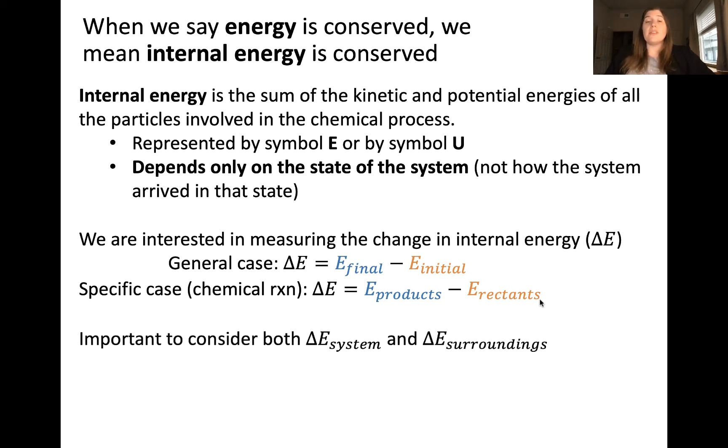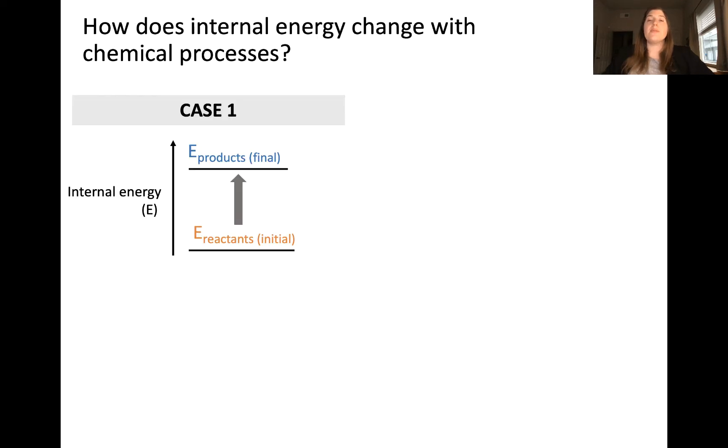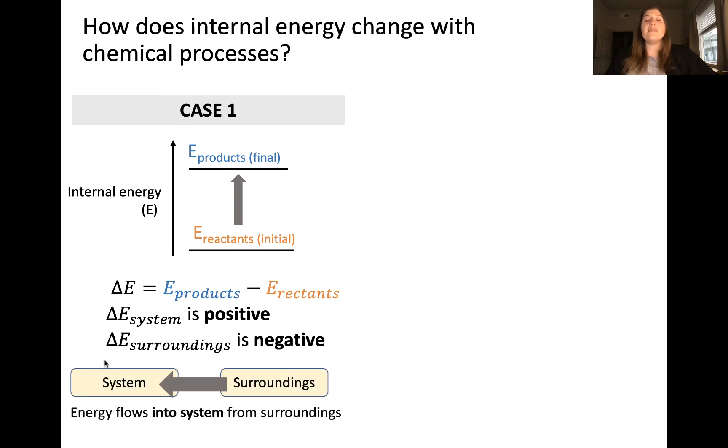It's important to consider both the energy associated with the system as well as the surroundings. We'll explore this with two scenarios. Consider a case where the internal energy of the products is greater than that of the reactants. What you'll observe is that the change in energy of the system is positive, and the internal energy change of the surroundings is negative. This means that energy is being transferred from the surroundings to the system.